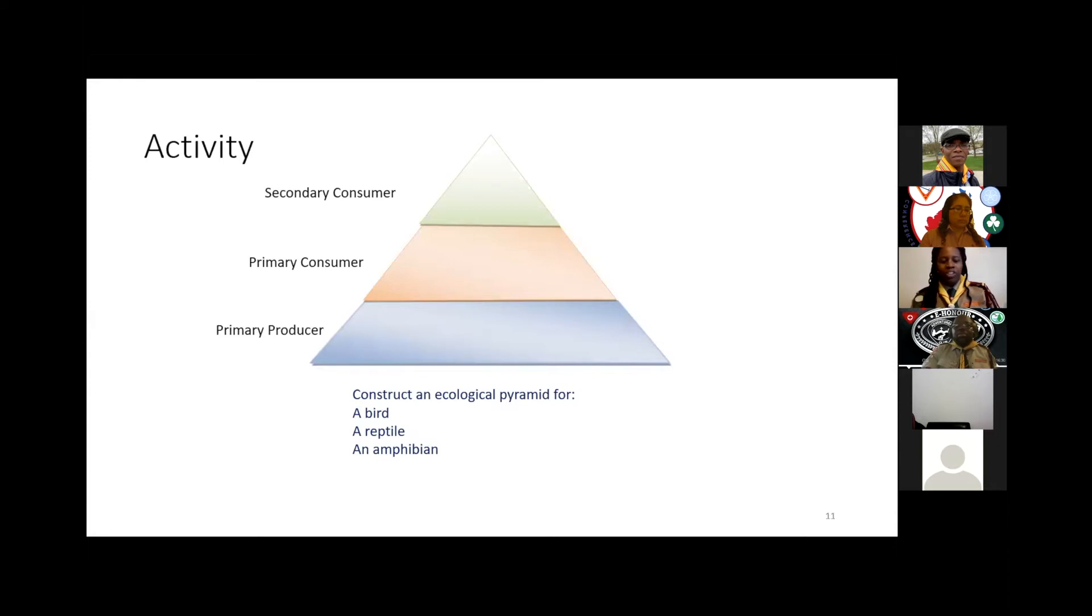Activity for you. We're going to look at the other three pyramids: the bird, the reptile, and the amphibian. The bird at the top as the secondary consumer will have a thrush. If you put a thrush at the top of your pyramid, then I want you to think, what are the other two in the pyramid? The primary consumer and the producer. In the chat, once again, if you can pop that in.